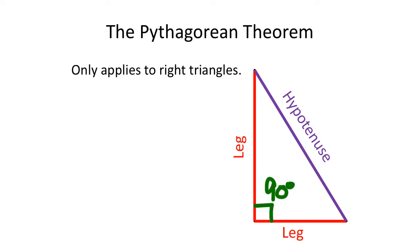I always look at the right angle mark as kind of like an arrow — it's pointing at the hypotenuse. That's the 90-degree angle, and the hypotenuse never makes up the 90-degree angle. It's always opposite to that 90-degree angle.